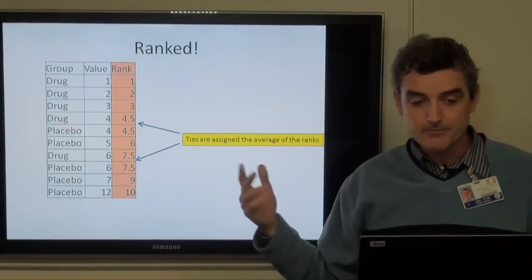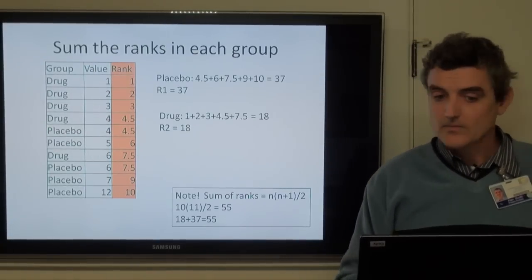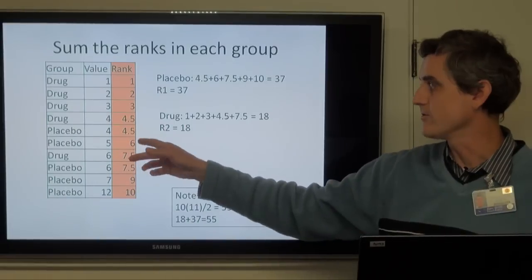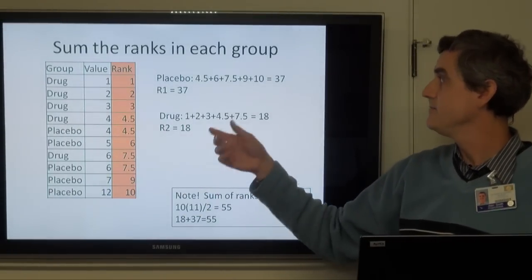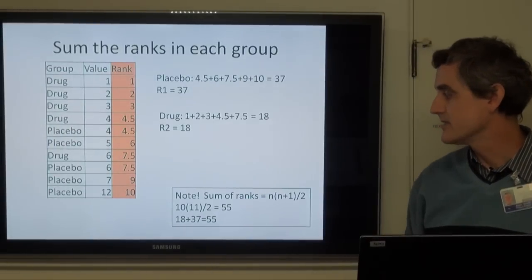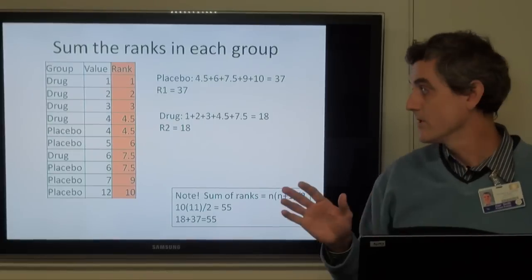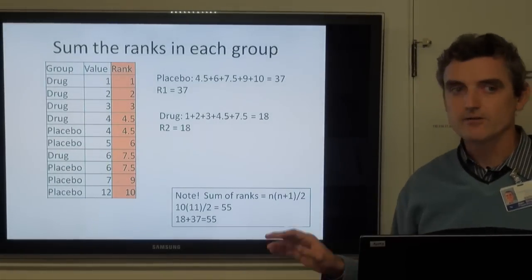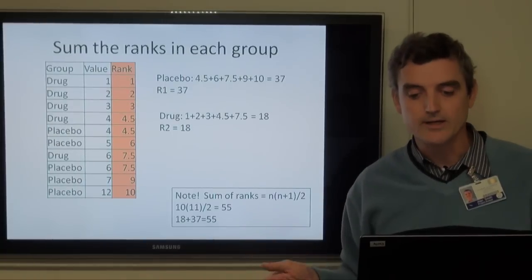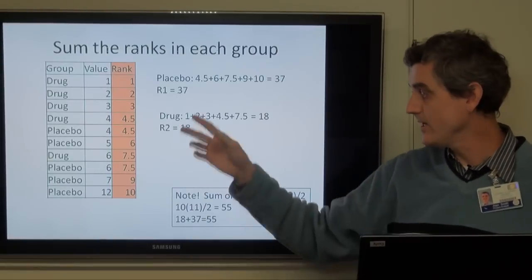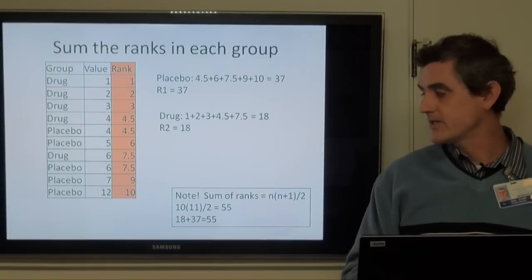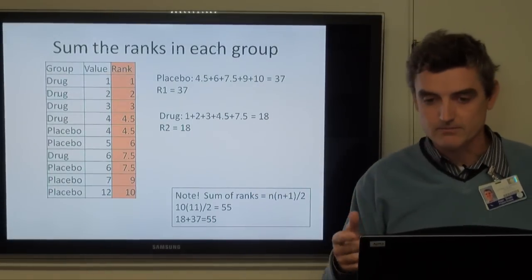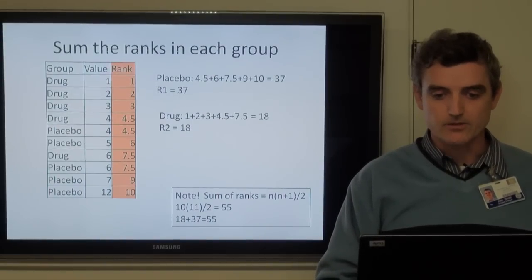Those tied at six get the average of seven and eight — 7.5. Then we add up the ranks in each group: the sum of ranks for placebo is 4.5 + 6 + 7.5 + 9 + 10 = 37; for the drug it's 18. A handy rule to check your work: the sum of all ranks equals N times (N+1) divided by 2. For 10 observations that's 10 × 11 / 2 = 55, which equals 18 + 37 — so we can verify our math.